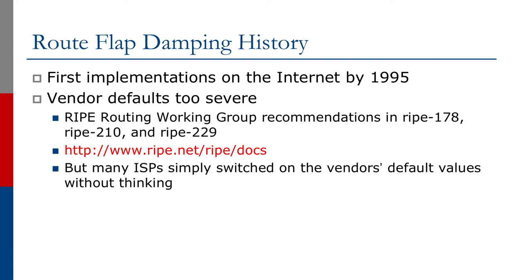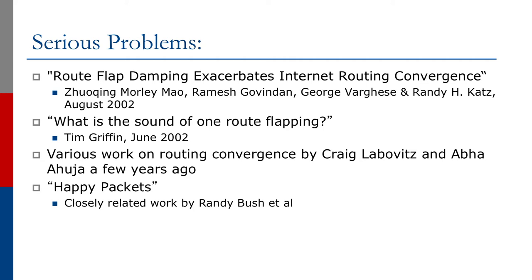Unfortunately, many network operators simply switched on the vendor default values without thinking. Route flap damping was introduced to solve a specific problem in the mid-90s that had by and large disappeared by the early 2000s. Researchers in the early 2000s had started looking at routing convergence, and several works discovered that route flap damping was actually causing more problems with the convergence of the internet routing system than it was solving.